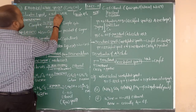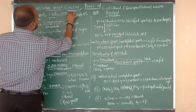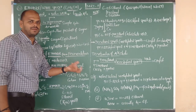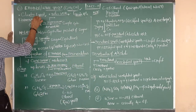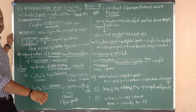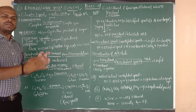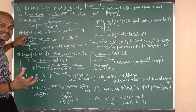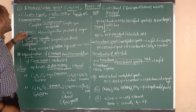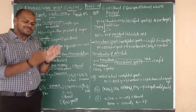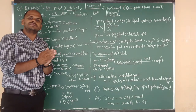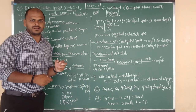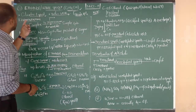Ethanol is a colorless liquid, same as methanol. It boils at 351 Kelvin. Commercially, ethanol is prepared from a compound called molasses by the method of fermentation. Fermentation is the commercial method used to prepare ethanol.